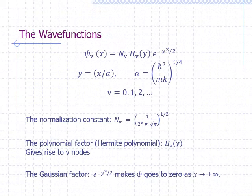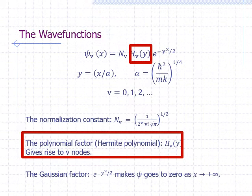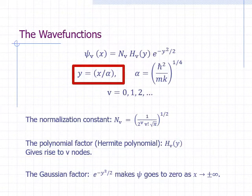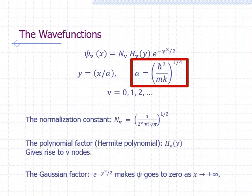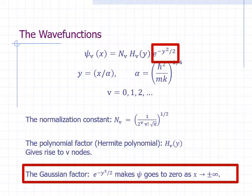The wave functions, one for each allowed value of quantum number v, can be written as a product of three factors: the normalization constant N sub v, the Hermite polynomial, and a Gaussian factor. The Hermite polynomial is expressed in terms of a variable y that is proportional to x, where y is defined as x over alpha, and alpha is the fourth root of h-bar squared over mk. The polynomial factor gives rise to nodes in the wave functions — for quantum state v, the wave function has v nodes. The Gaussian factor is e to the negative y squared over 2, and it ensures that the wave function goes to zero as x approaches plus or minus infinity, making psi normalizable.